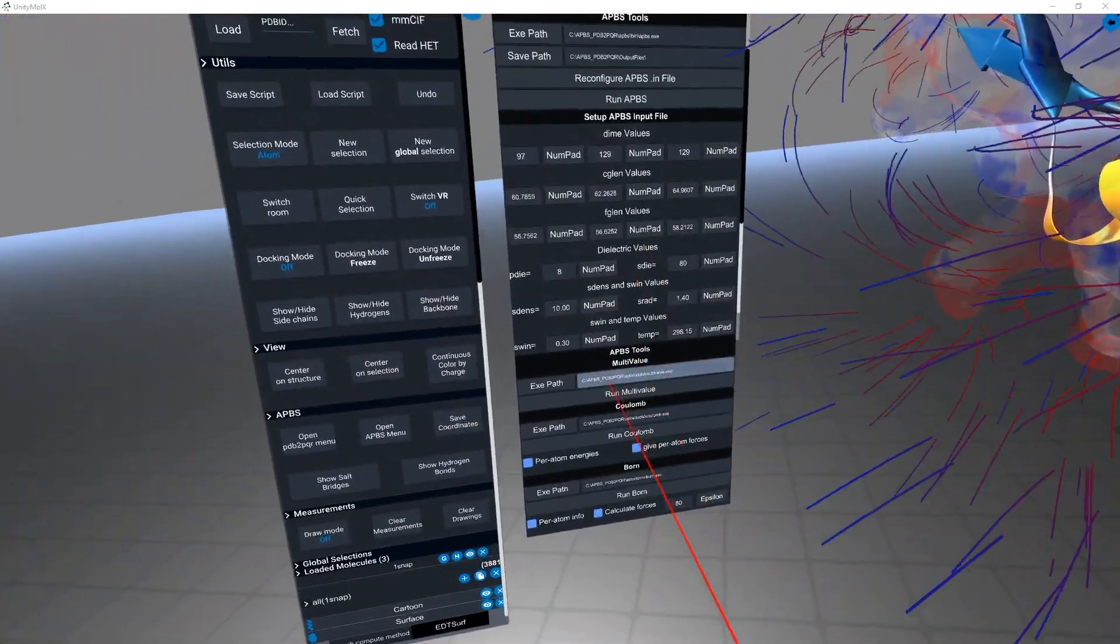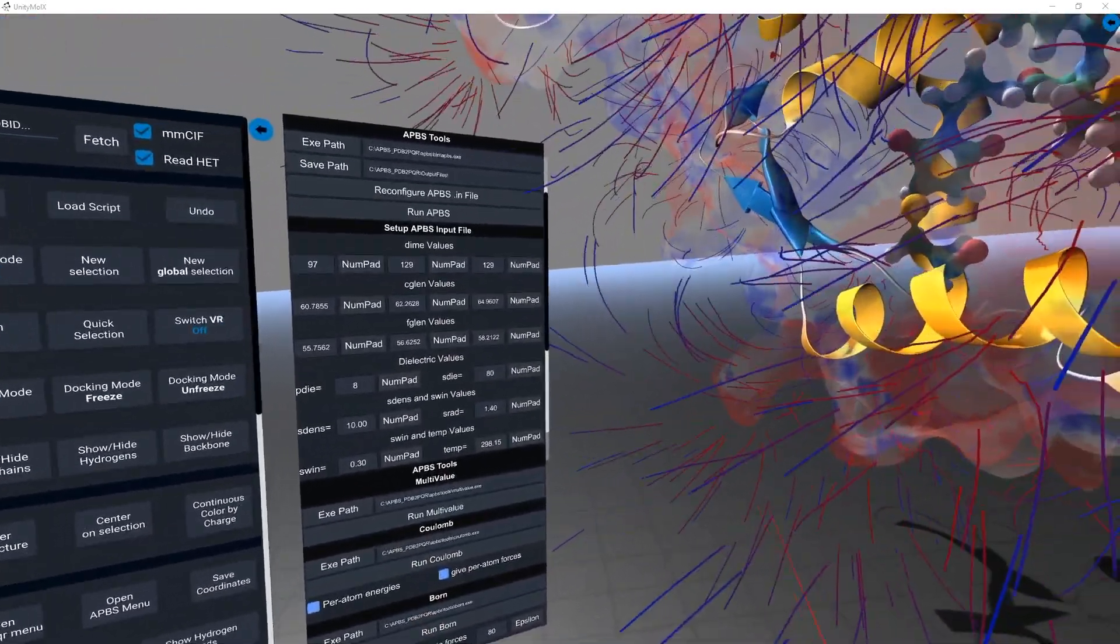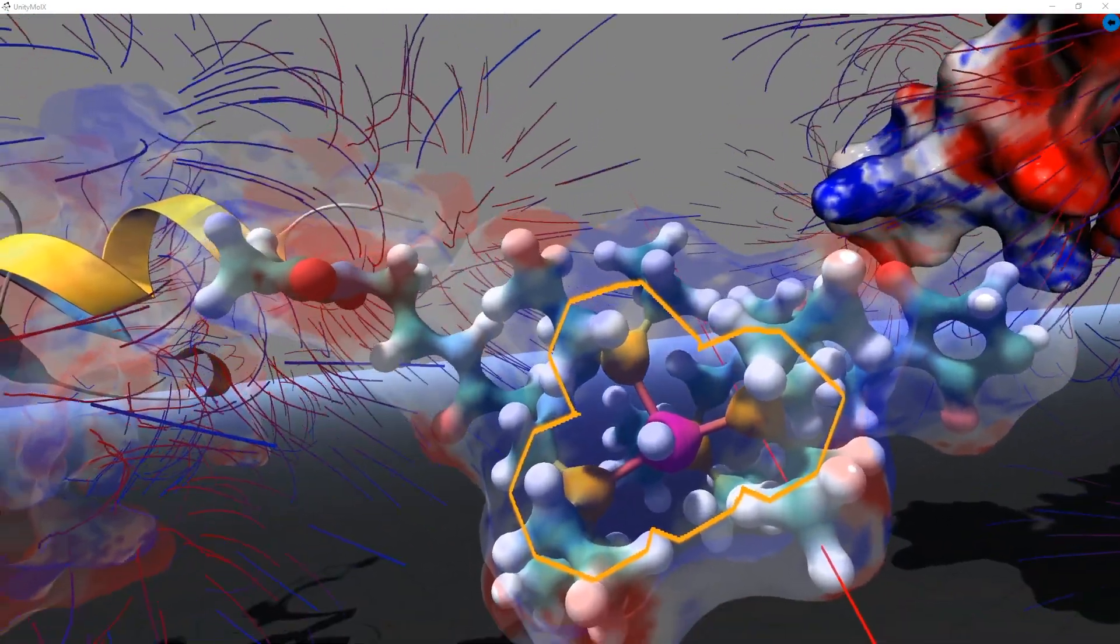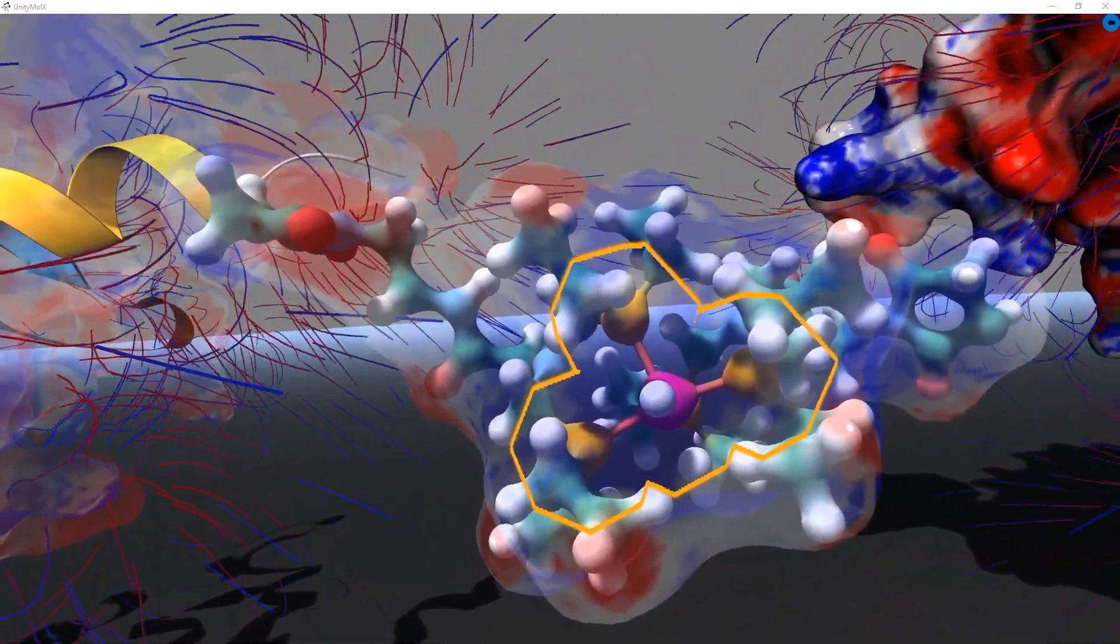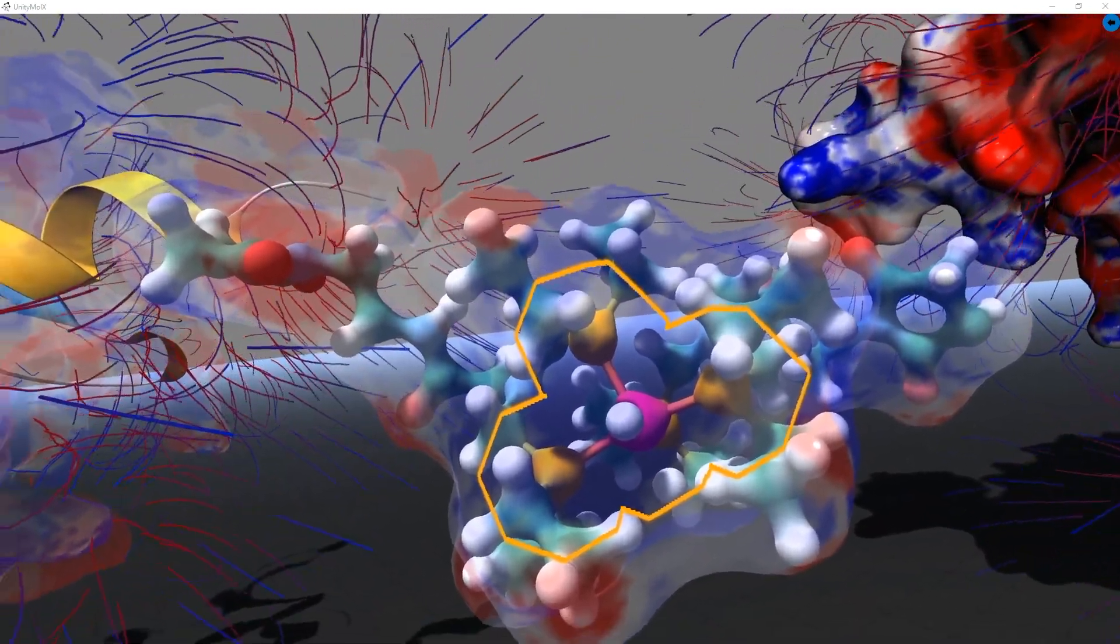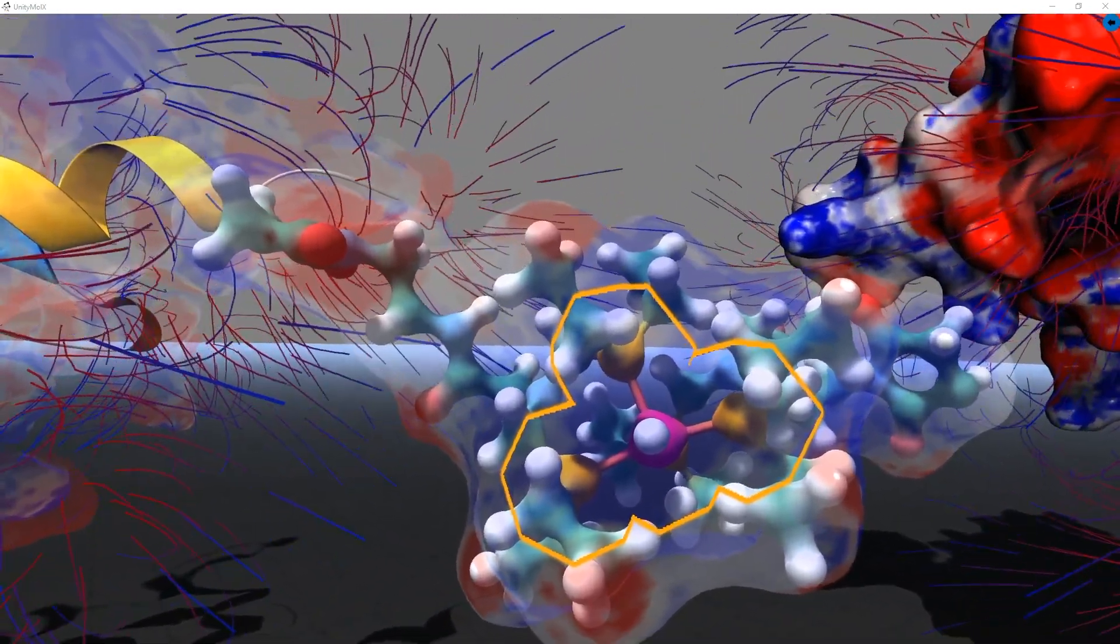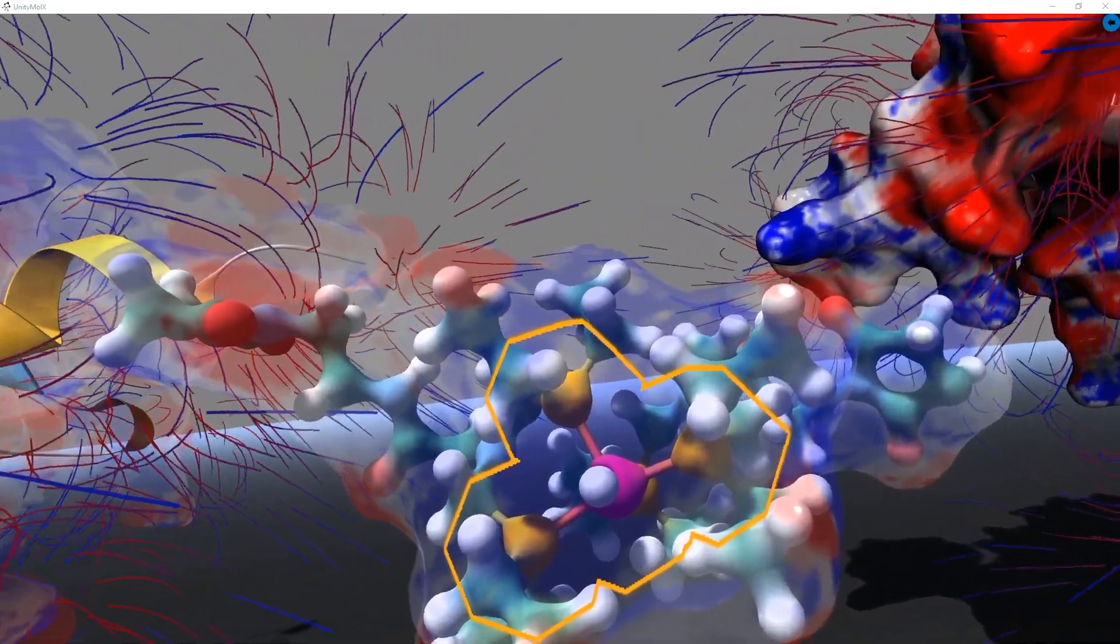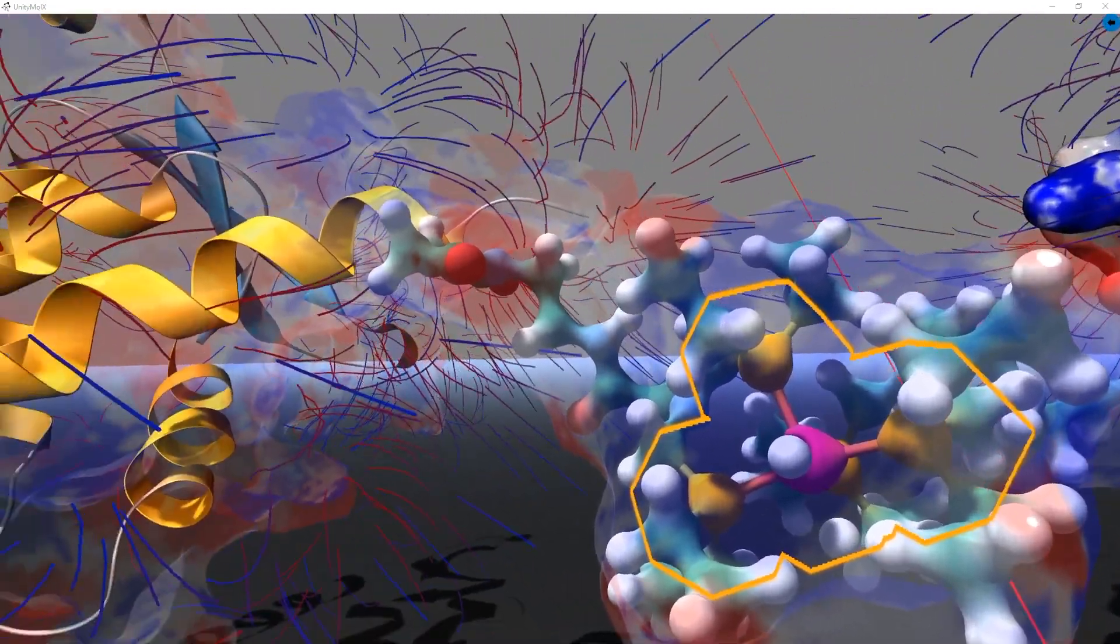Now that we have the atoms selected that we are going to investigate, we simply just have to click the multi-value button. If the APBS tools are in a different directory, we can use the buttons on the menu to select the location of the multi-value executable.